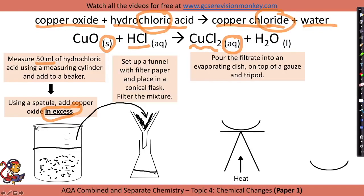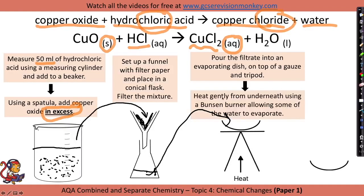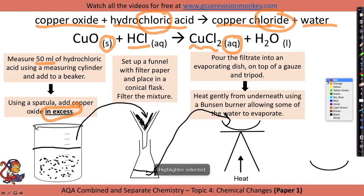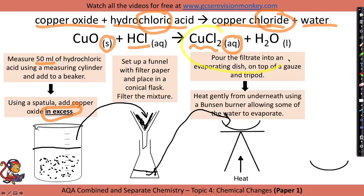We will then pour this filtrate into an evaporating dish on top of a gauze and a tripod with a Bunsen burner underneath. We will heat gently from underneath, allowing some of the water to evaporate. From the equation above, what we are going to make is copper chloride and water, so we need to get rid of the water in order to get the copper chloride crystals on their own.